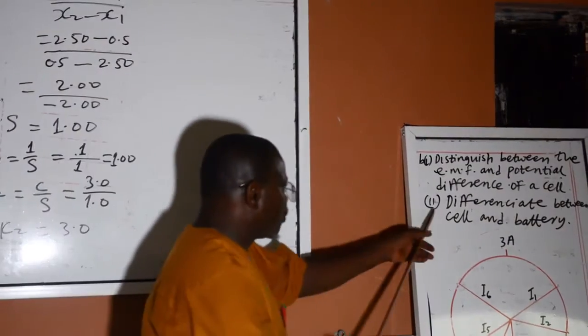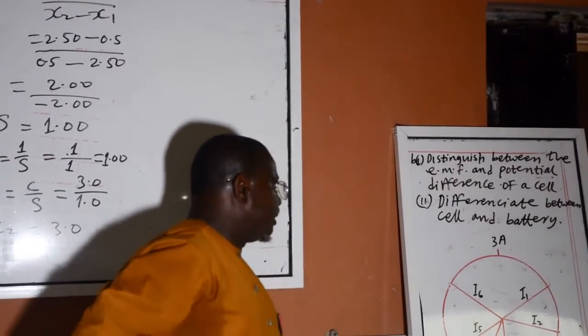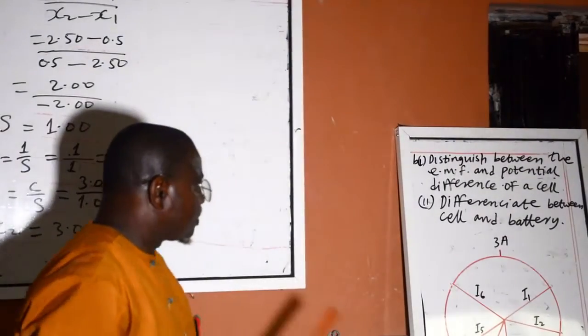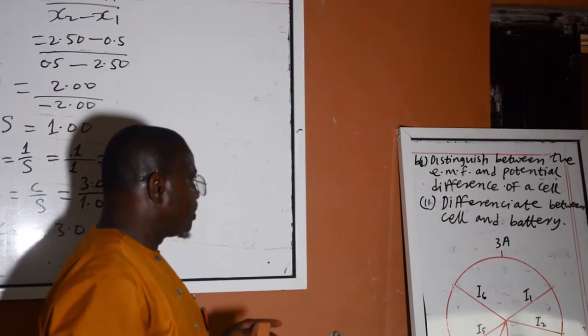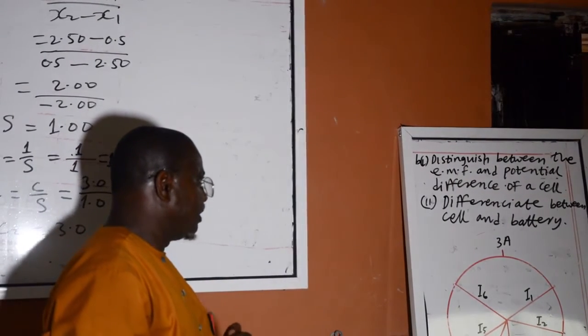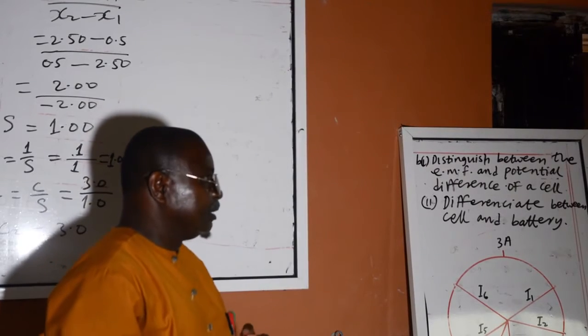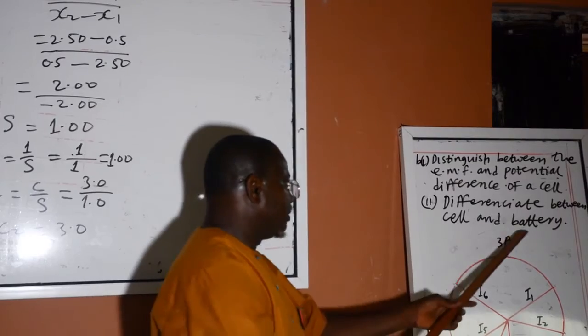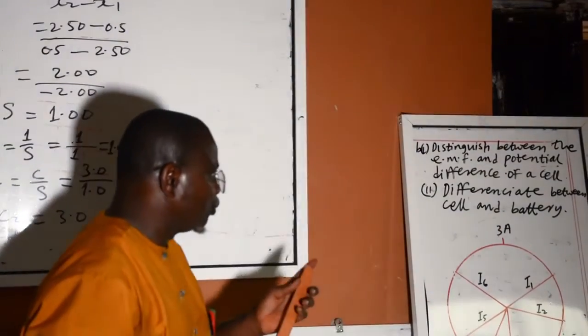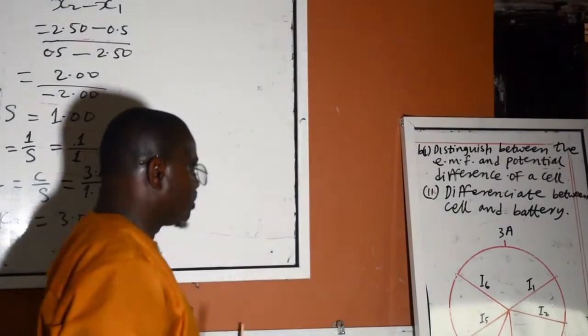The second one, differences between cell and battery. The cell is the integration of positive electrode, negative electrode, and electrolyte. While battery is the combination of 2 or more cells.